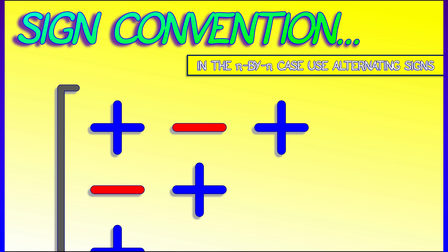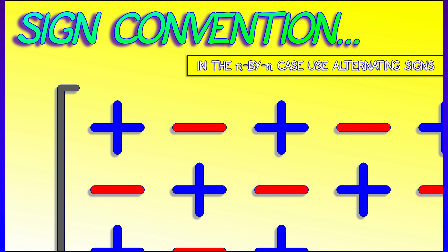In general, the upper left-hand corner — the A11 term — always has a plus. And then it alternates: plus, minus, plus, minus, plus, minus, along rows and columns.